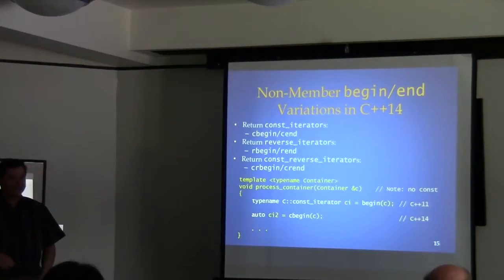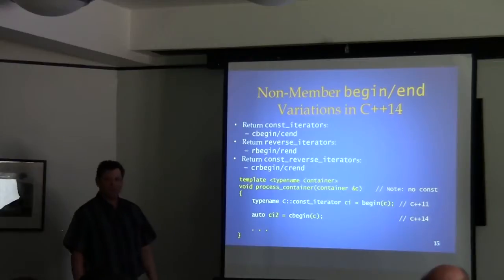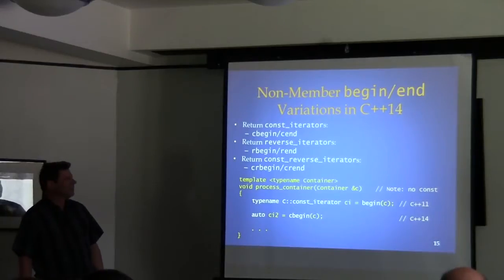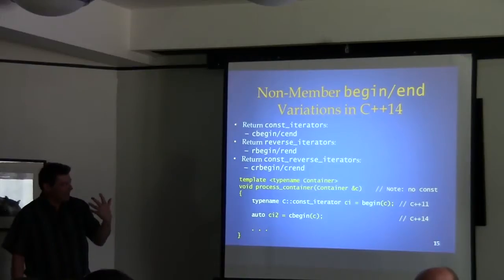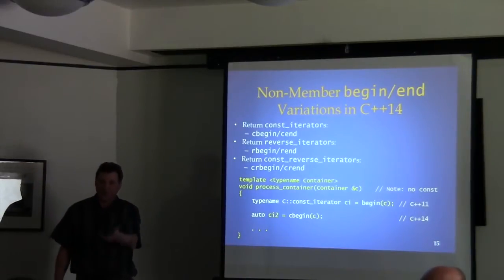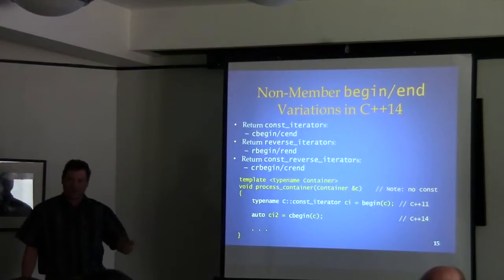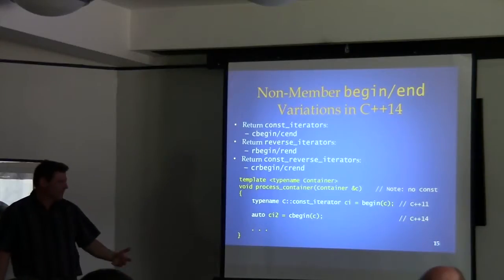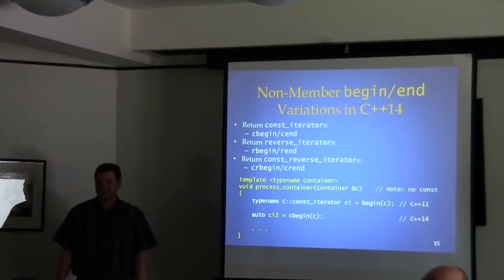First C++14 slide. C++14 adds the natural traditional variations of the non-member begin and end — so now we can say cbegin. That keeps us, if we have a non-const container but want a const_iterator, from having to declare Container::const_iterator. Now we can just use auto and cbegin, and it works.